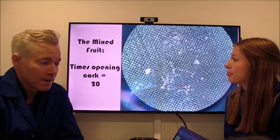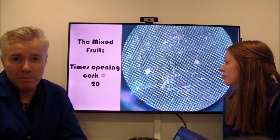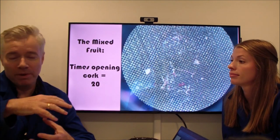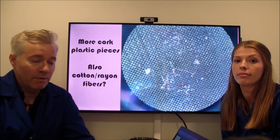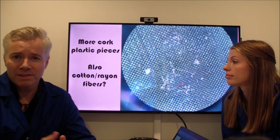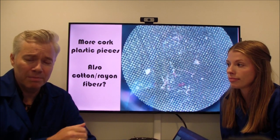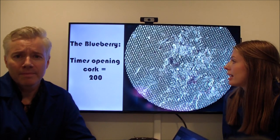Then the mixed fruit sample—we saw what visually looked like more pieces from opening and closing the cork 20 times, and we also with the FTIR found that there were plastic cork pieces in there, mainly. But we also had some fibers which weren't actually plastic but cotton and synthetic cotton.